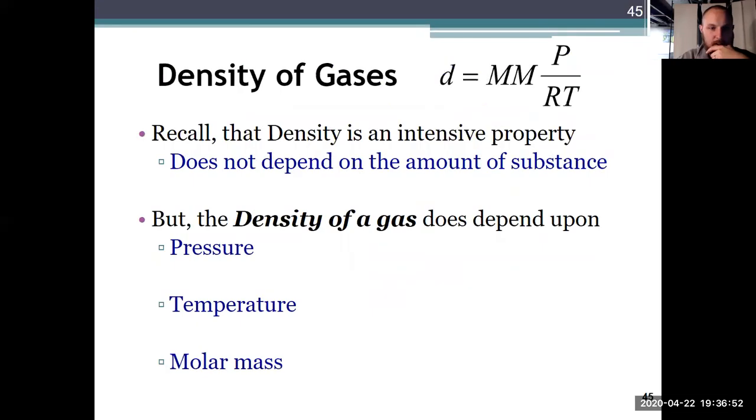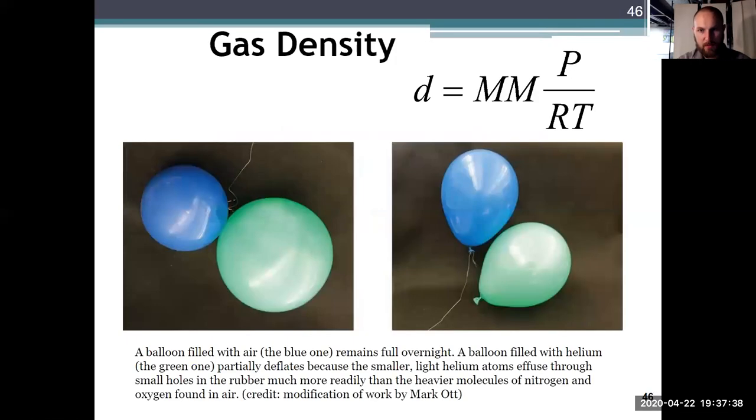And when I do that, I can solve for the density of a gas as being equal to the molar mass multiplied by the pressure over R, the gas constant, and T, the Kelvin temperature. So we said in Chapter 1, when we were learning about intensive and extensive properties, density is intensive. It doesn't depend on the amount. You cut something in half, it still has the same density. But the density of a gas does depend on pressure, temperature, and molar mass. The higher the pressure, the higher the density. The higher the molar mass, the higher the density. The higher the temperature, the lower the density. Which are all things that are illustrated with these pictures of the balloon.